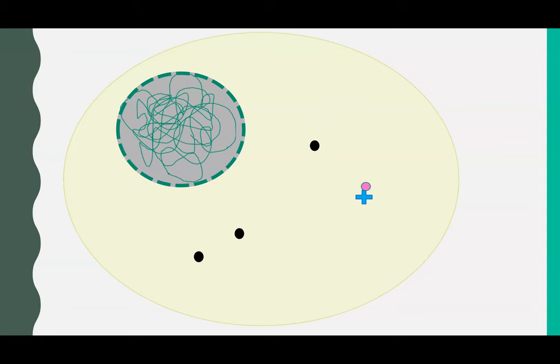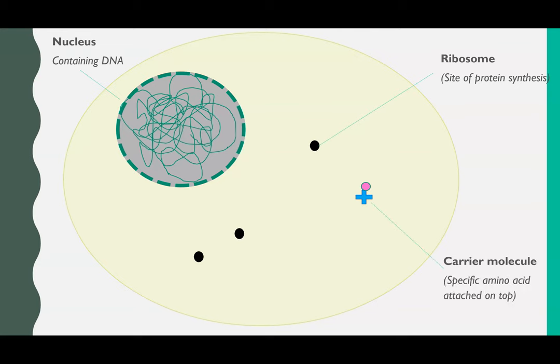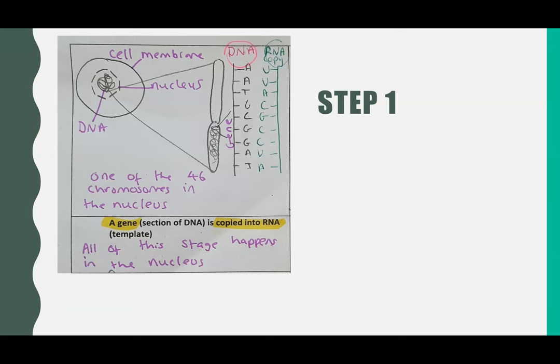It all involves the ribosome, a carrier molecule, and the DNA. The ribosomes are shown here in black, we've got the nucleus containing the DNA, and the carrier molecule we're going to see throughout the animation as an X shape with a particular amino acid on top. We're going to go through six steps in this comic strip and then show you the finished one at the end. So step one: